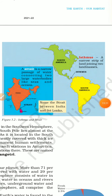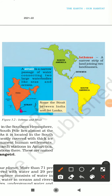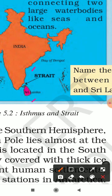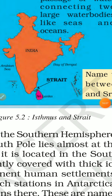Two important geographical terms: An isthmus is a narrow strip of land joining two land masses — for example, the Isthmus of Panama joining North America and South America. A strait is a narrow passage of water connecting two large water bodies like seas and oceans — for example, the Palk Strait, which lies between India and Sri Lanka.